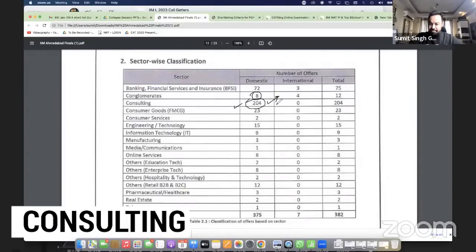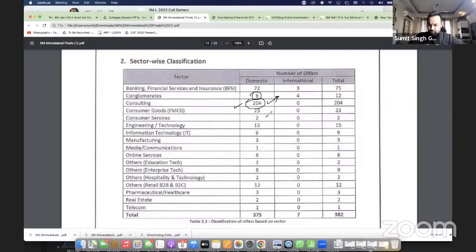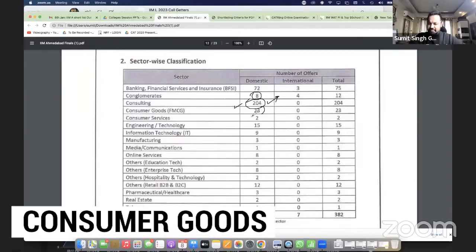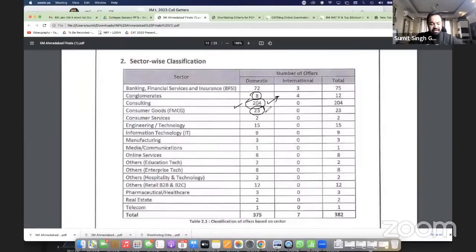McKinsey, BCG, Bain - companies of the world. Consumer goods FMCG also had good placement. FMCG used to be the dream company, but everyone is choosing consulting. Consumer services, engineering technology.